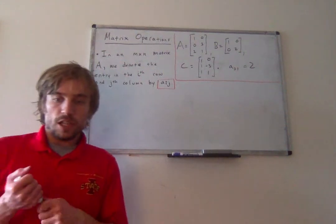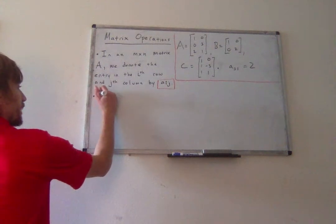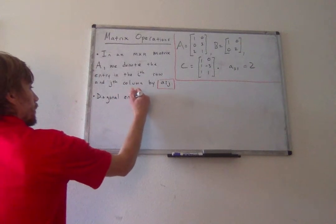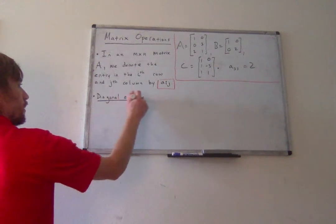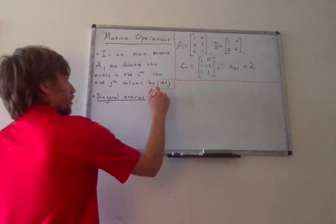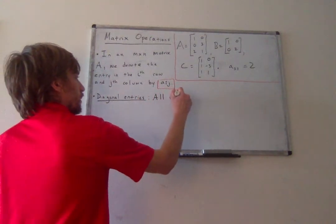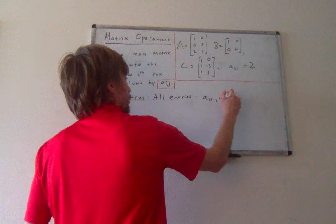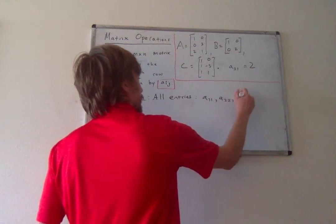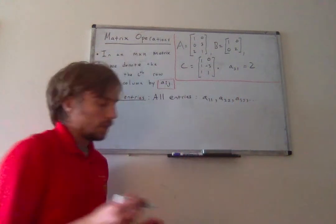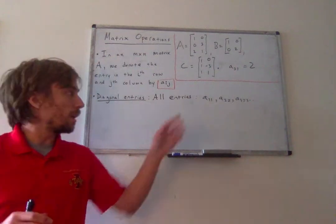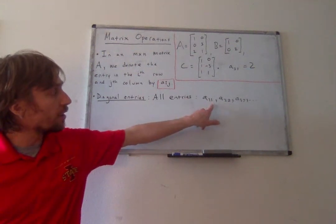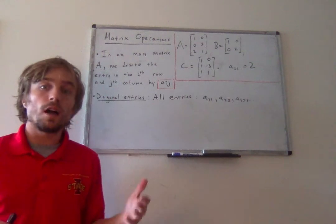Alright, so with that notation out of the way, we can now introduce what are called the diagonal entries of a matrix. So the diagonal entries of a matrix are all entries that look like this. And so I'm leaving this a little open-ended because it depends, the dimensions of the matrix sort of depend on how many diagonal entries there are going to be. But specifically, the diagonal entries of a matrix are all entries where the row and column are the same.